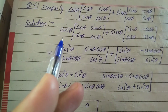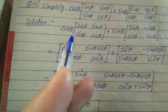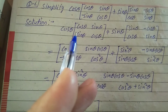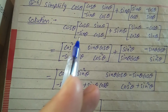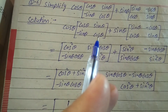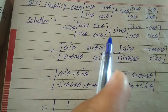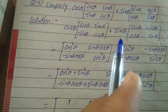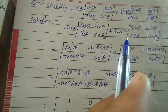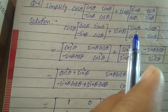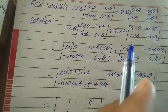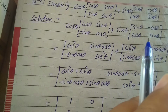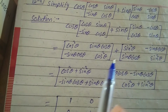Solution start. Take cos θ multiplied by the matrix [cos θ, sin θ; -sin θ, cos θ] plus sin θ multiplied by the matrix [sin θ, -cos θ; cos θ, sin θ].